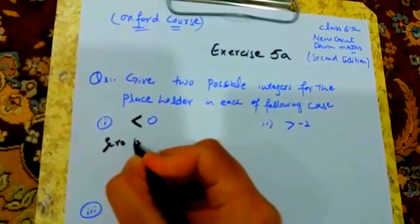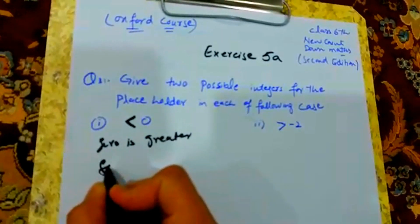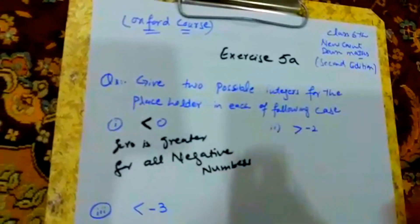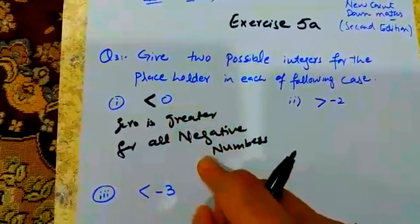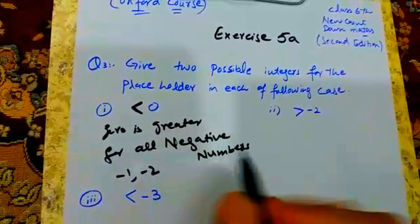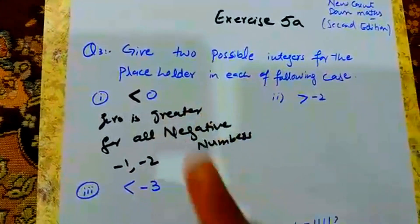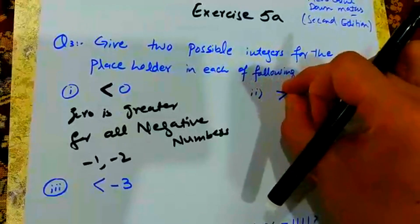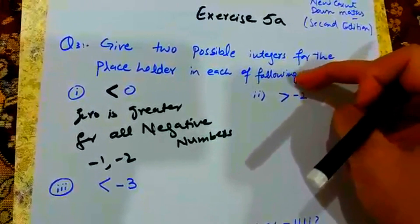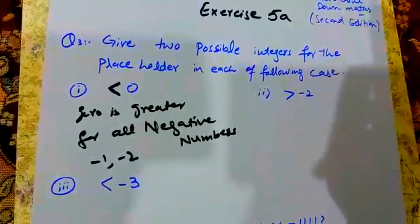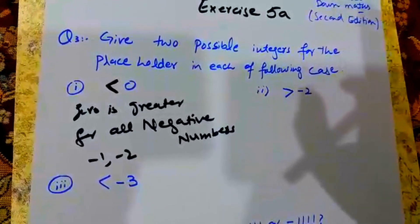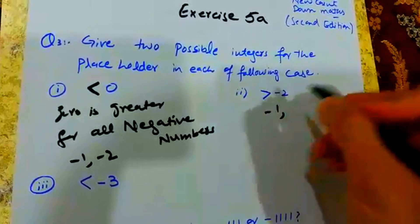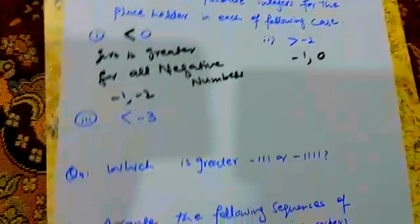Zero is greater than all negative numbers. Negative numbers — this symbol is closed, meaning its mouth is closed, so it means it is small. We have 2 numbers which are greater than minus 2, so whatever positive terms there are, they are greater than minus terms. For example, minus 1 is greater than minus 2, and we also have 0.